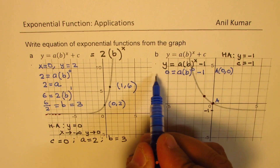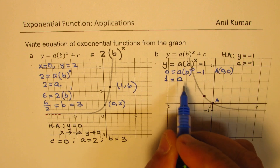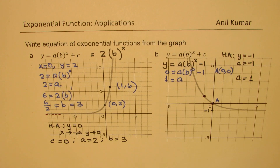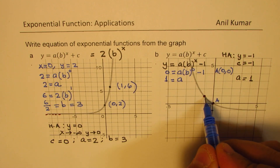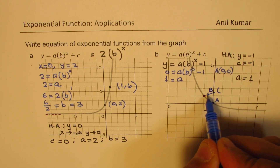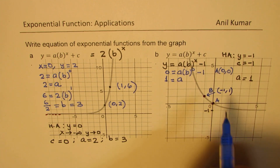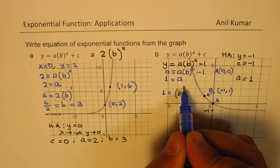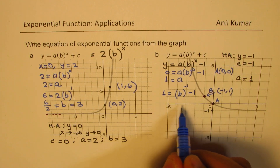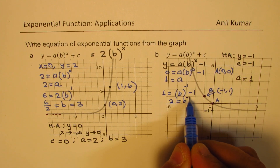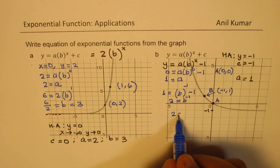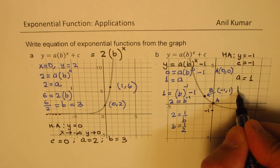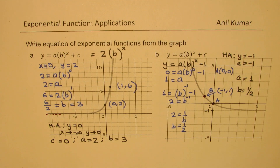Using point A at (0, 0), we substitute into the equation: 0 equals a times b to the power of 0 minus 1. Taking 1 to the left side gives 1 equals a, so a equals 1. For b, we use point B at (−1, 1): substituting gives 1 equals 1 times b to the power of minus 1 minus 1. Rearranging, 2 equals b to the power of minus 1, which means 2 equals 1 over b, so b equals one-half.